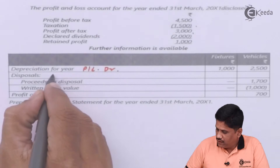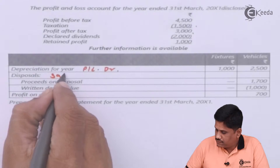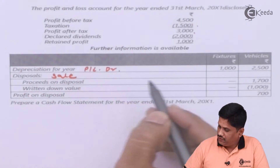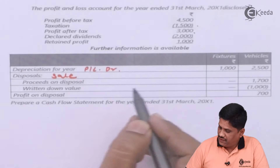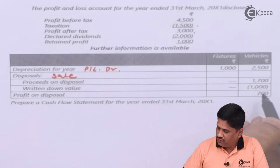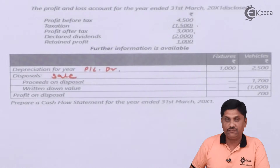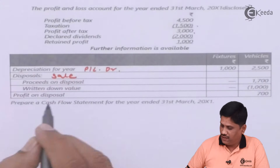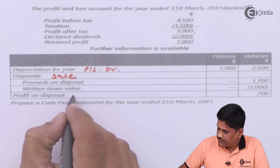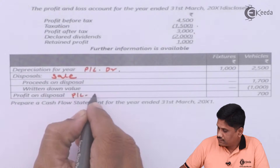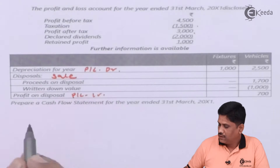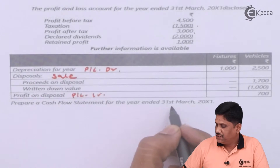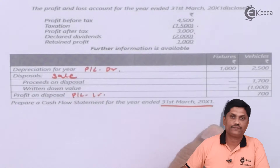Disposal means sale of vehicle. Proceeds of disposal: 1,700; written-down value: 1,000; profit on disposal: 700. This profit must have been credited to the P&L account. The task is to prepare a cash flow statement for the year ended 31st March 200X1.